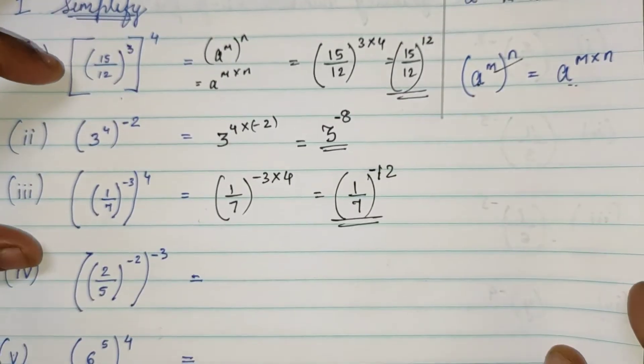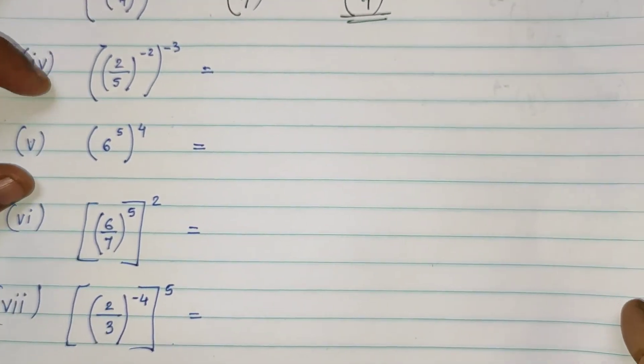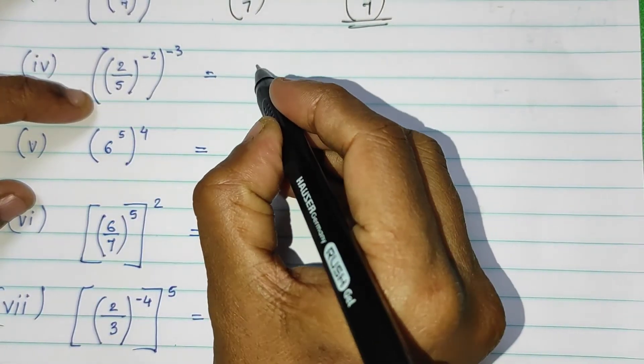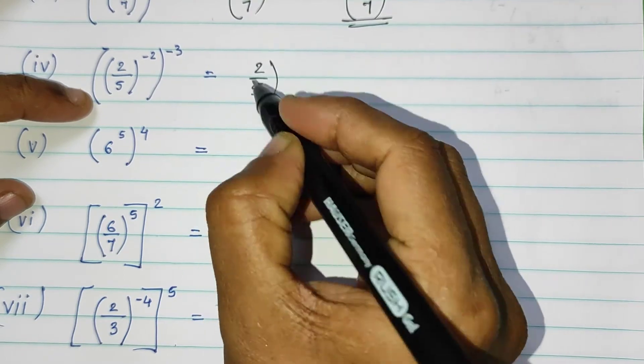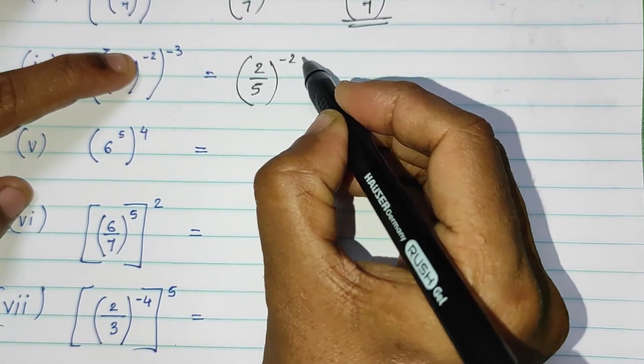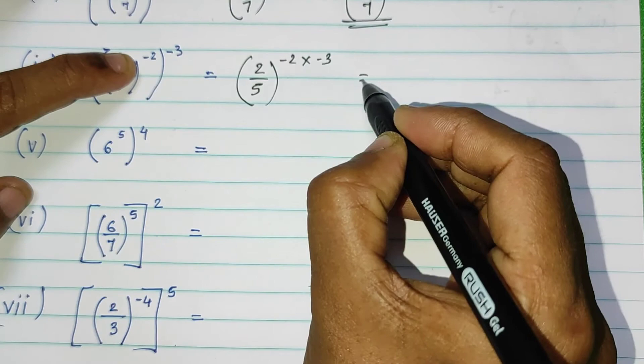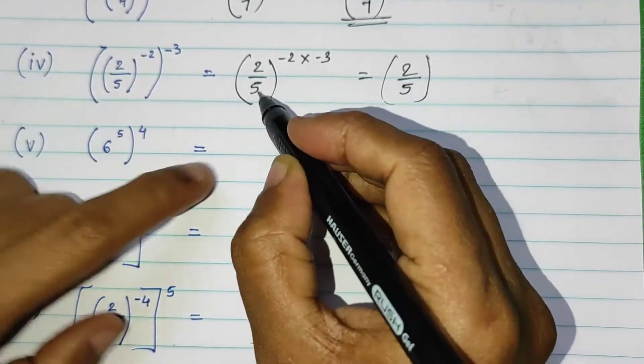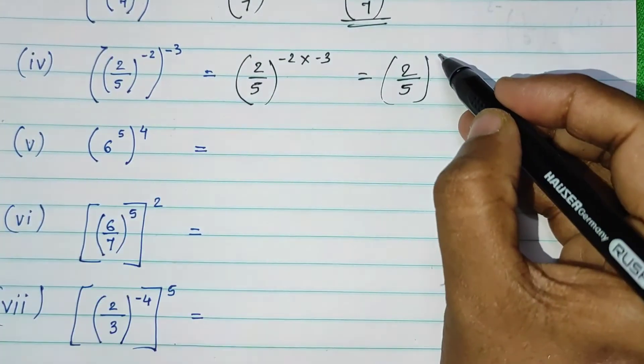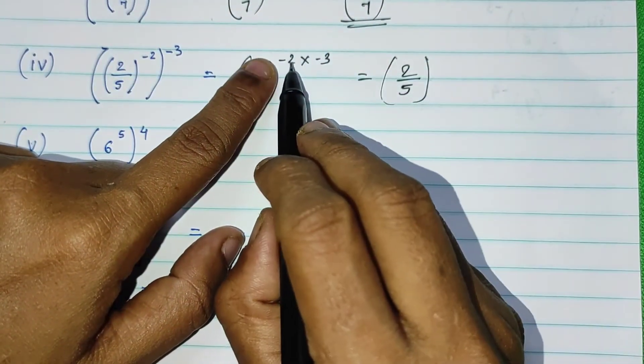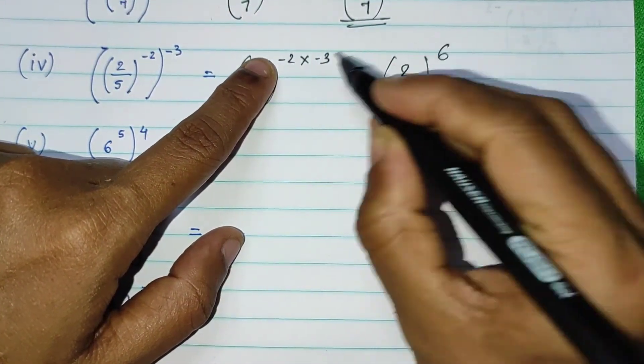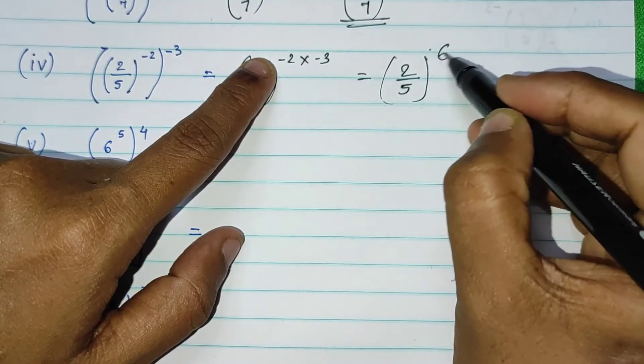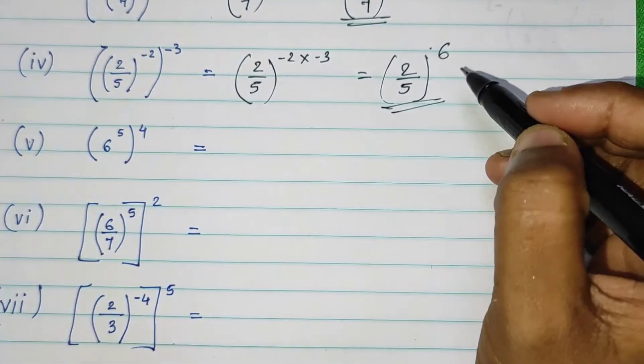Then, further. 2 upon 5 the whole raised to minus 2 into minus 3. So 2 upon 5 raised to 2 times 3 is 6. Minus into minus is plus. This is your answer.